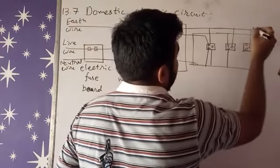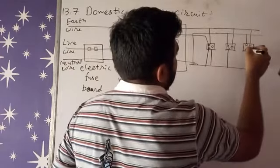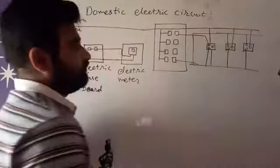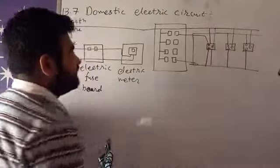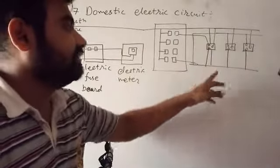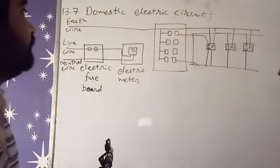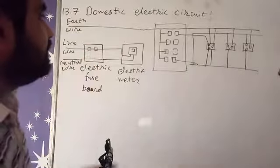This is earth, this is live wire, and the third one is neutral wire. So we are always having three terminals: one is for earth, another is for live wire, and third one is for neutral wire. This is how this circuit works.